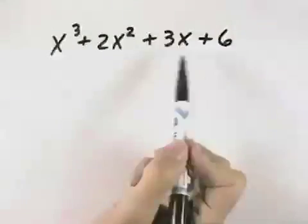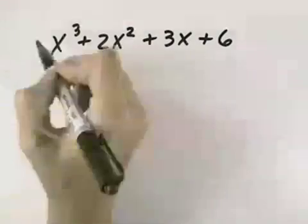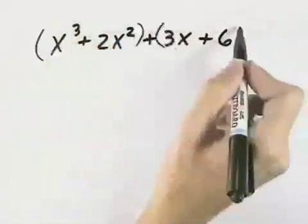So then we say there are four terms. The only way to factor four terms is to try grouping. So what I'm going to do here is group the first two and the last two.